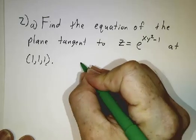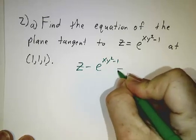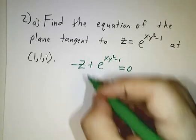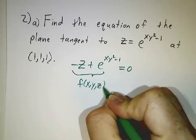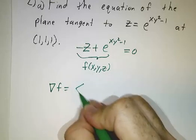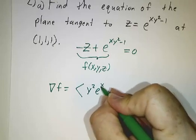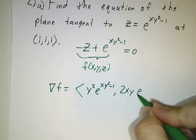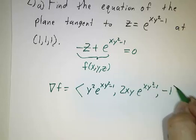This can be rewritten as z - e^(xy² - 1) = 0, or equivalently -e^(xy² - 1) + z = 0. We call this whole expression F(x, y, z). Taking the gradient: the partial derivative with respect to x is y²·e^(xy² - 1); the partial derivative with respect to y is 2xy·e^(xy² - 1); and the partial derivative with respect to z is -1.